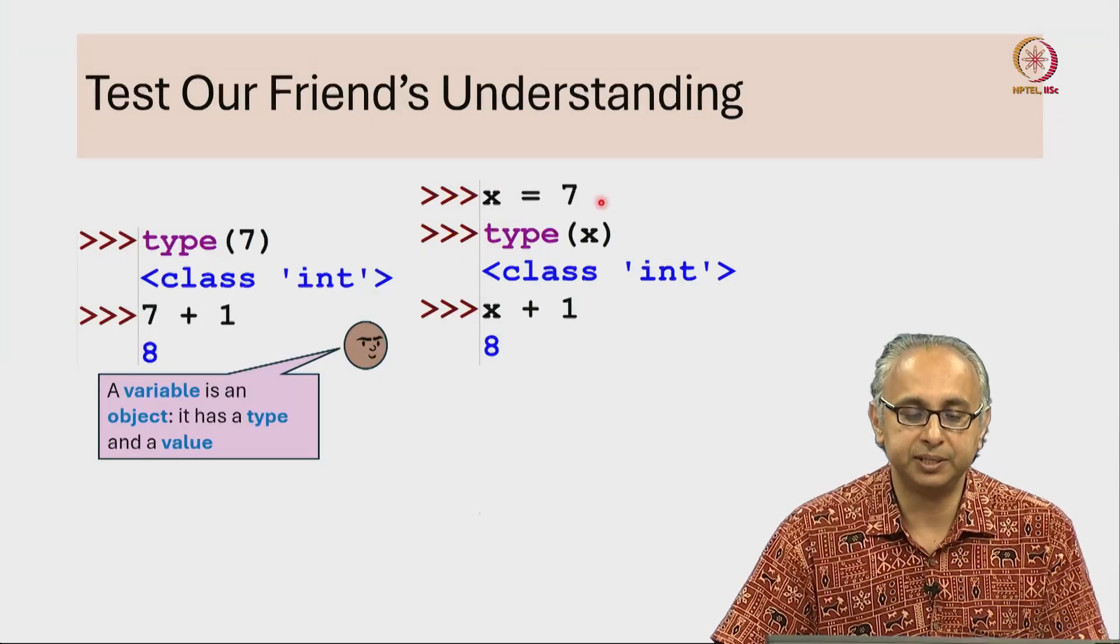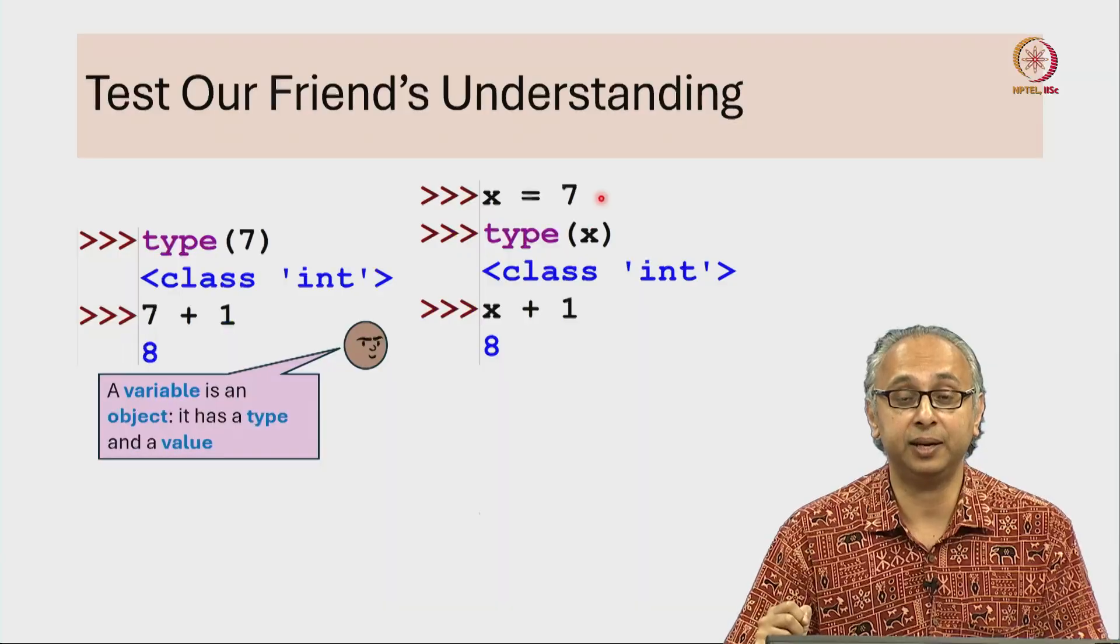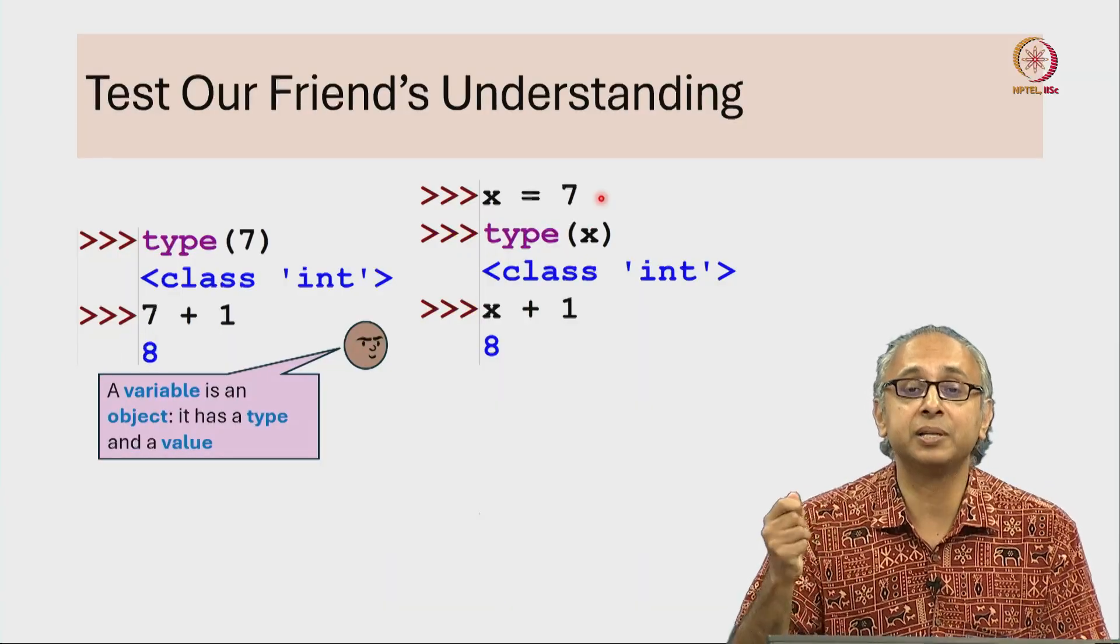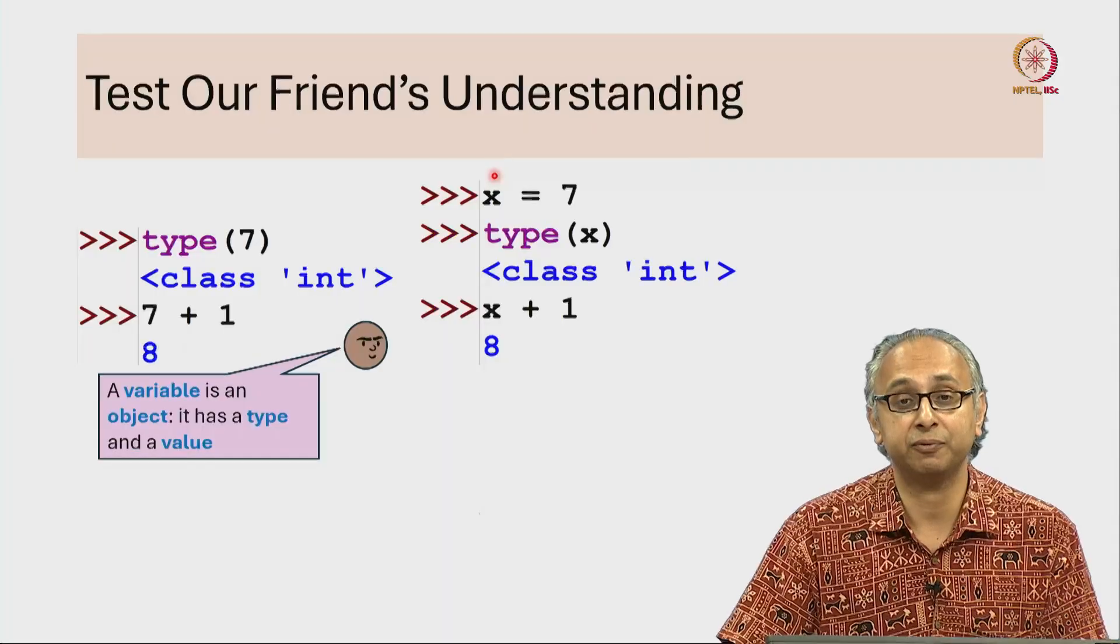We have said that an assignment statement produces an object on the right hand side and then labels that with the name of the variable that appears on the left hand side of an assignment statement.